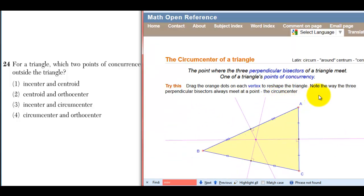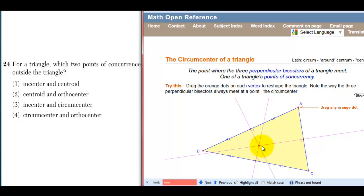The circumcenter is the point where three perpendicular bisectors of a triangle meet. Right now, the point of concurrency is inside the triangle. If I drag the orange dot, I can make it so it's outside the triangle.